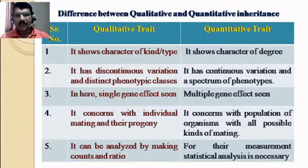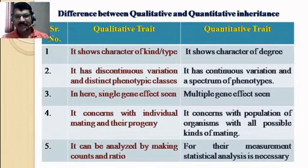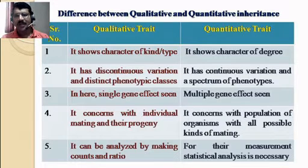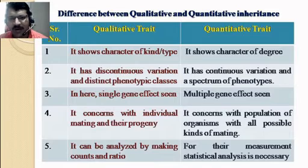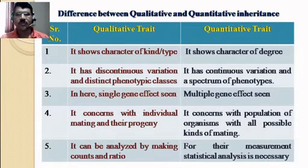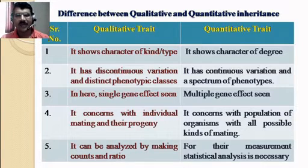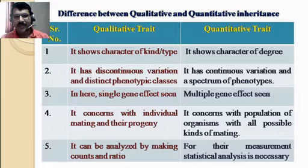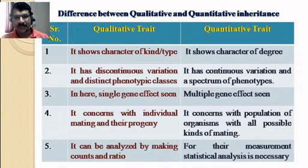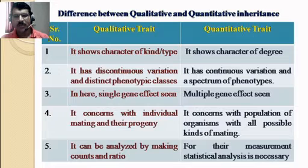The second point: qualitative traits have discontinuous variation and distinct phenotypic classes. Variation is not found continuously — only red-colored and white-colored flowers will be produced, or in cases of co-dominance, pink-colored flowers. But this is limited to two or three phenotypic characters. Qualitative traits mostly show only two alternating, contrasting characters, hence discontinuous variation. There will typically be only two phenotypic classes: tallness or dwarfness.